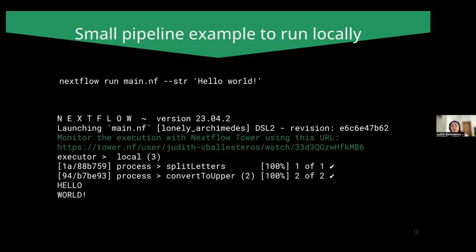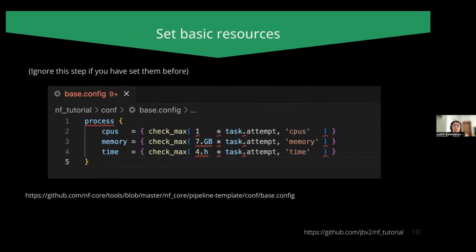In execution, you'll see that it indicates it is running locally. Now let's apply these three steps to integrate the NFCore config. We may have already assigned basic resources for all the processes of our pipeline. If you haven't assigned them yet, this is the time — you can set them for all the pipeline or for each process. Here, for example, I assign CPUs, memory, and time in a configuration file that I named base.config within a conf directory.